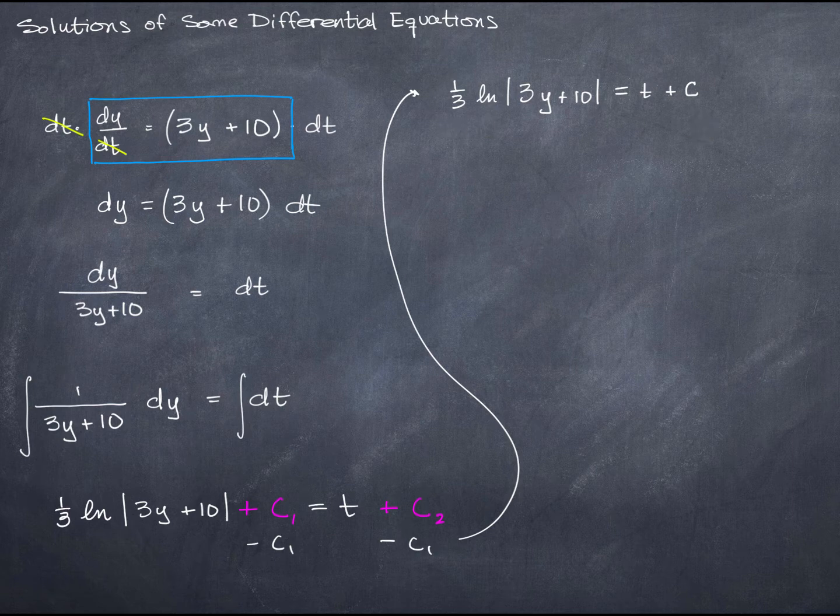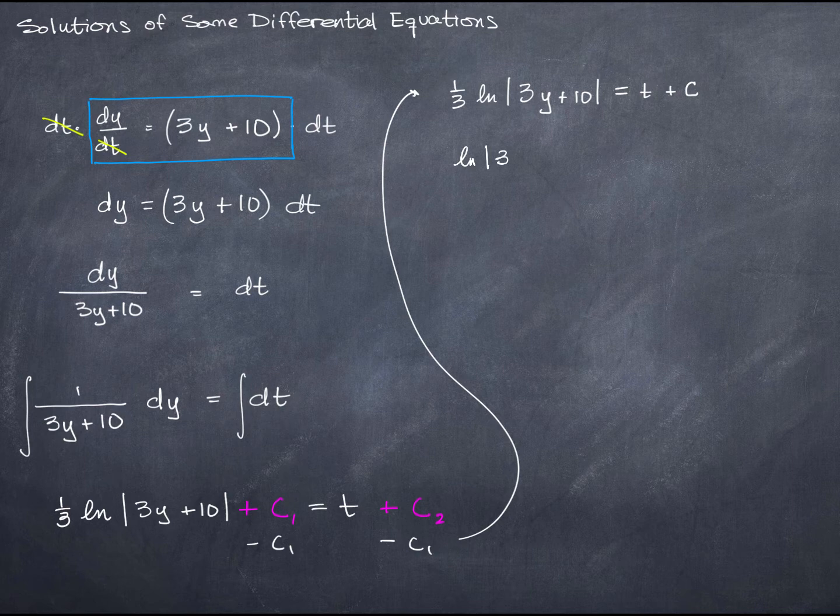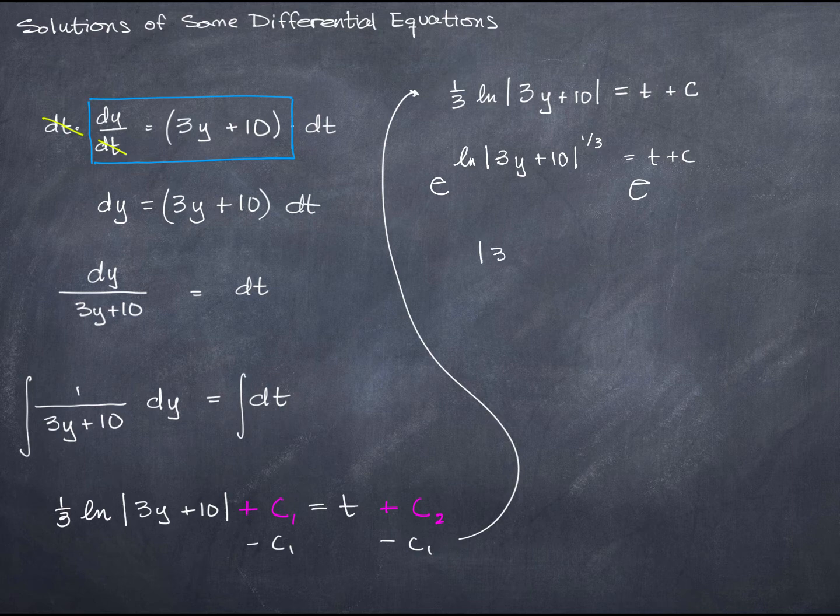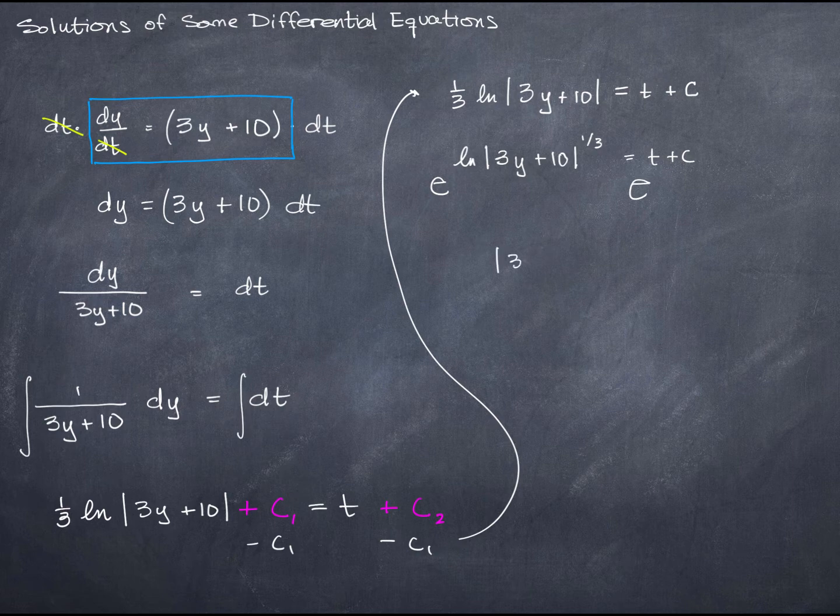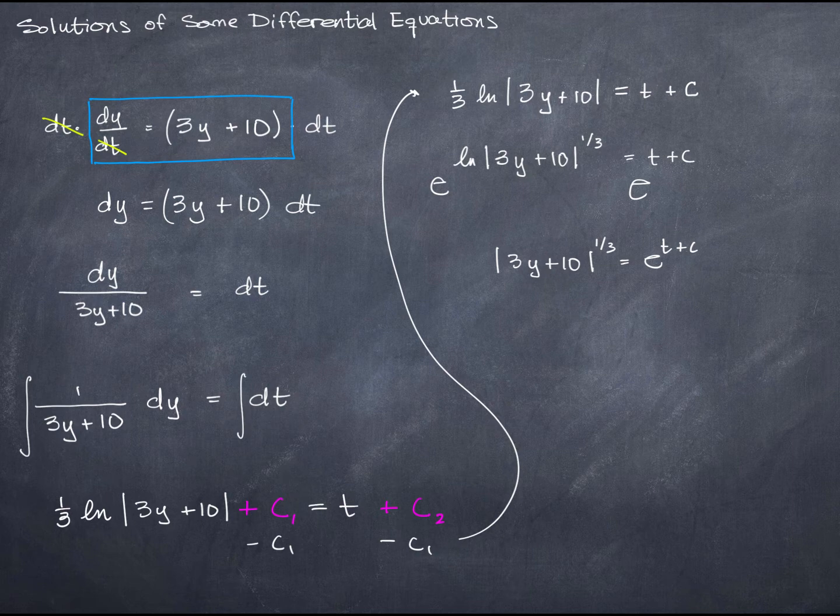So I'm going to play around with it a little bit. Let's use properties of logarithms to move that one third to this exponent position. Then I'm going to exponentiate both sides. I'm going to raise both sides, e to the power of each side. That gives me just 3y plus 10 to the power of one third equals e to the t plus c. And then if I cube both sides,